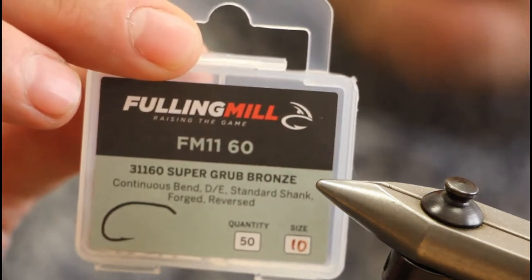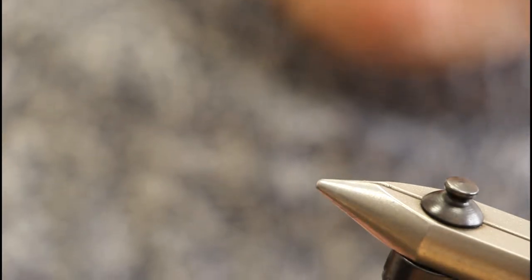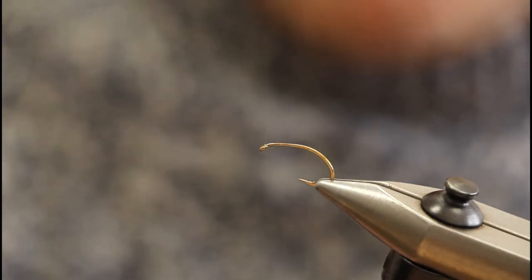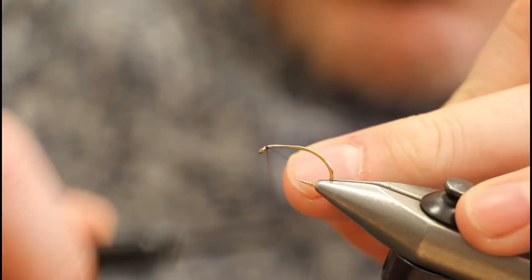The hook we're going to use is a Fulling Mill 1160 in a size 10. I've got one of those in the vise. Now just attach a brown thread.